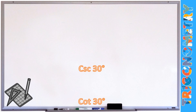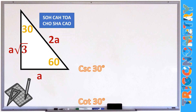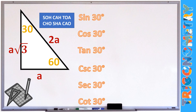Let's start with finding the six trigonometric ratios of the 30 degree angle. Using SOH-CAH-TOA, let's find sine 30°. Sine is opposite over hypotenuse. Looking at the 30 degree angle, the opposite is A and the hypotenuse is 2A. So sine 30° = A/2A. Canceling A, the value of sine 30° is 1/2.